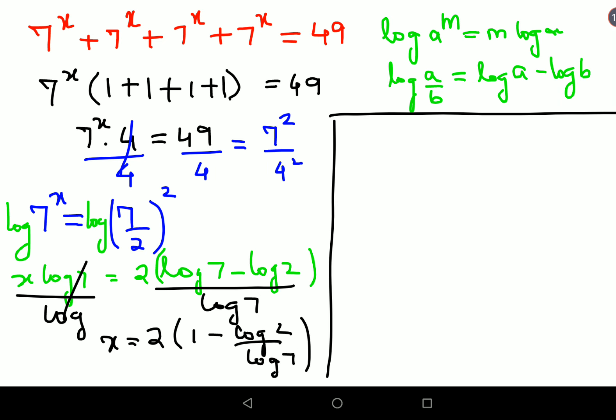If they have not provided you with the log table, this is where you can leave your answer, or you can also write this as x = 2(1 - log₇(2)). Because when you have log(a)/log(b), that can be written as log_b(a).